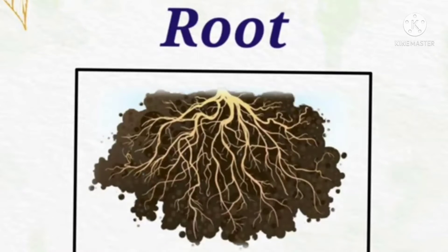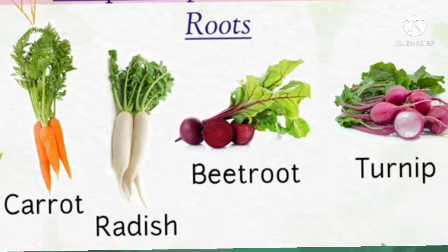Roots. Roots hold the plant in the soil and absorb water from the soil. Children, we have learnt this earlier. Now let's see some roots that we eat. Carrot, radish, beetroot, and turnip are some examples of roots that we eat.